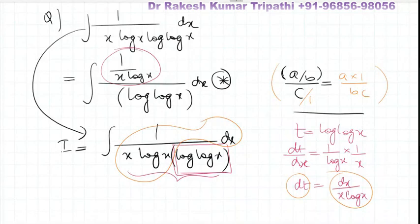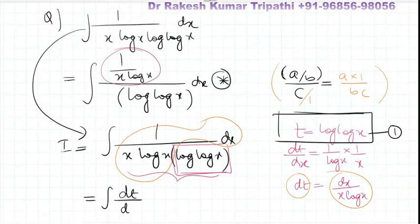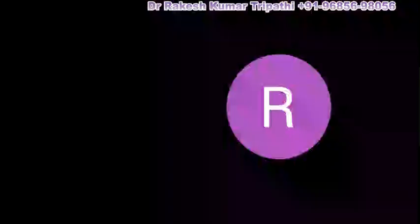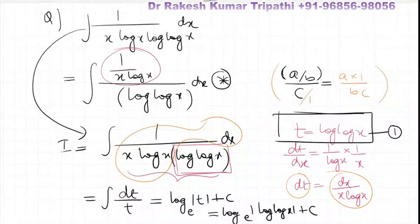Now you can see that dx upon x log x can be replaced by dt. And in the denominator, log(log x) is t. So the whole integral has been converted into t only. The integral of 1 by t with respect to t is log of mod of t base e plus c, which equals log of mod of log(log x) base e plus an integral constant c. This is the final answer.